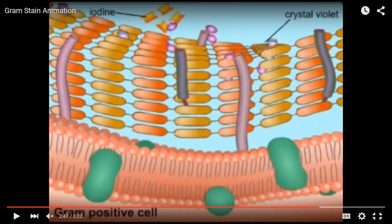The next step is decolorization with alcohol. One reason hand sanitizers work is that alcohol is the sanitizing agent — it disrupts bacterial membranes. But here the key effect is that because peptidoglycan is mostly sugar, alcohol shrinks that layer and the holes that were once relatively large become much smaller. This really helps trap in the crystal violet-iodine complex. But if you decolorize too much, it starts disrupting the membrane and even gram-positives will decolorize.